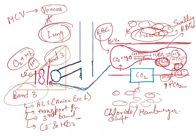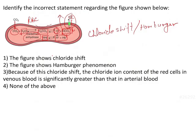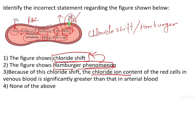Going back to the question: Statement 1 — the figure shows chloride shift occurring at the tissue site — correct. Statement 2 — the figure shows hamburger phenomena, the second name for chloride shift — correct. Statement 3 — chloride content of red cells in venous blood is significantly greater than in arterial blood, because venous blood has more CO2, leading to more bicarbonate production, more Cl entering in exchange, so more chloride in venous RBCs — correct. Since none of the statements is incorrect, the answer is option 4.